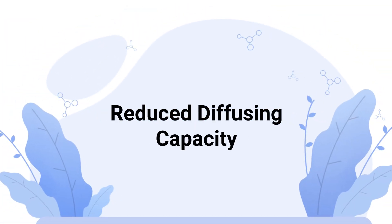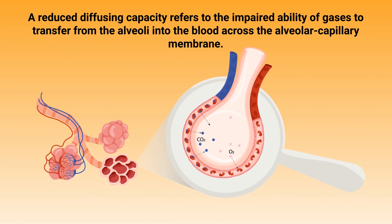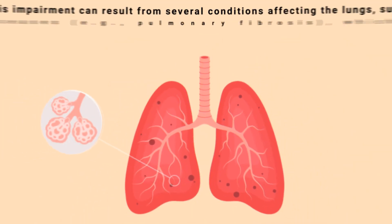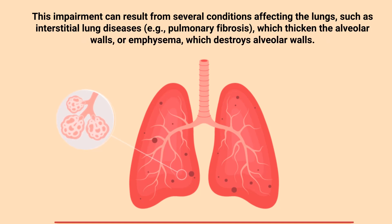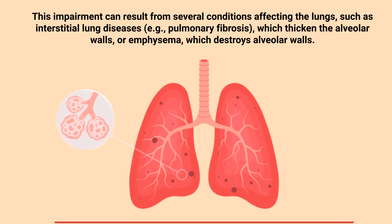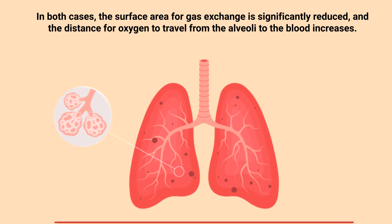Number 4, reduced diffusing capacity. A reduced diffusing capacity refers to the impaired ability of gases to transfer from the alveoli into the blood across the alveolar capillary membrane. This impairment can result from several conditions affecting the lungs, such as interstitial lung diseases, which thicken the alveolar walls, or emphysema, which destroys alveolar walls. In both cases, the surface area for gas exchange is significantly reduced, and the distance for oxygen to travel from the alveoli to the blood increases.